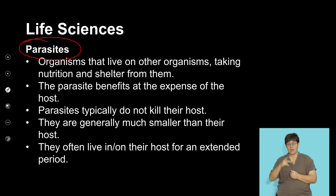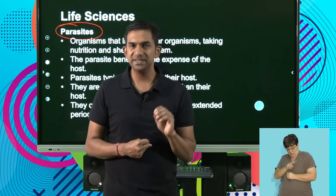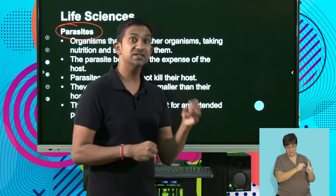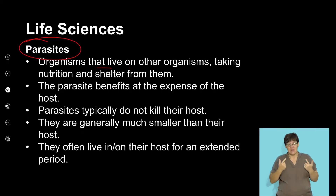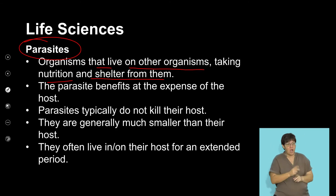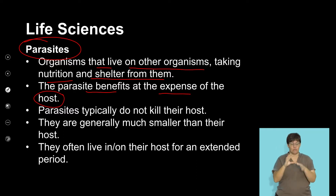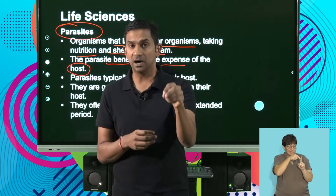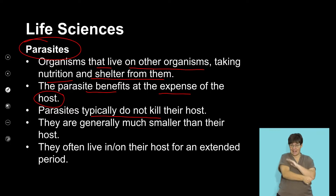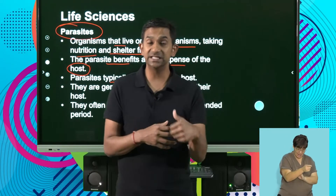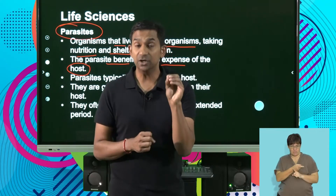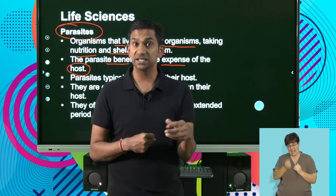Another group of consumers are called parasites. Parasites are individuals that live off a host, accessing energy or food from that host. Parasites also belong to a group of heterotrophs. Organisms that live on another organism, taking nutrition and shelter from them, are referred to as parasites. Generally the parasite benefits at the expense of the host. In a parasitic relationship, the parasite lives on a host, accesses nutrients and shelter, and causes harm to that host. A parasite typically does not kill its host — unlike a predator, which wants to kill its prey and consume it.